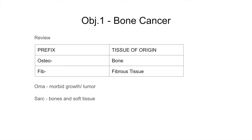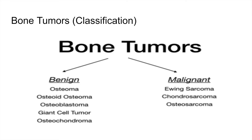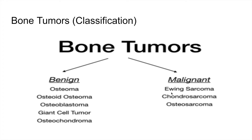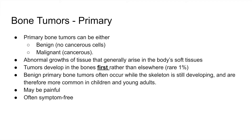Let's start with bone cancer, objective one. Some prefixes to know: osteo means bone, fib means fibrous tissue, oma means morbid growth or tumor, and sark means bone and soft tissue. Bone tumors are classified as benign or malignant. There are two types of primary bone tumors — benign and malignant — which are abnormal growths that generally arise in the body's soft tissue. Primary bone tumors develop in the bones first and often occur while the skeleton is still developing, which is why we see them in children and young adults.